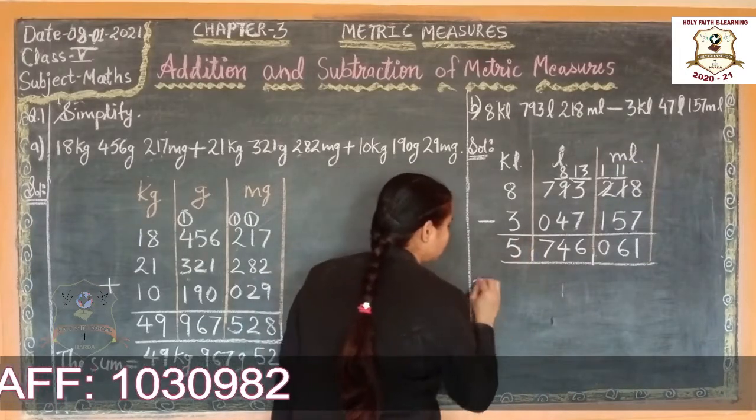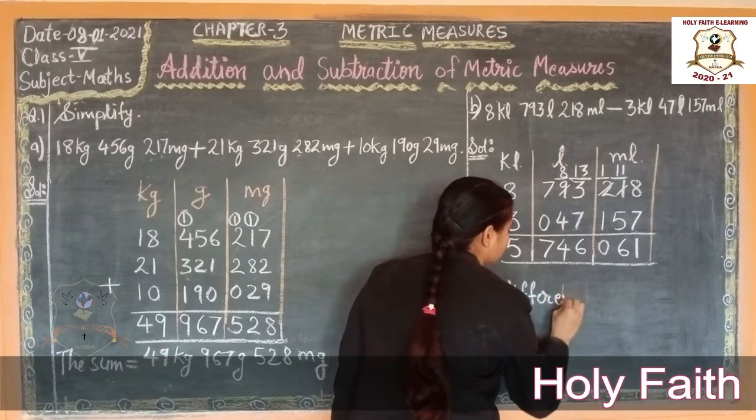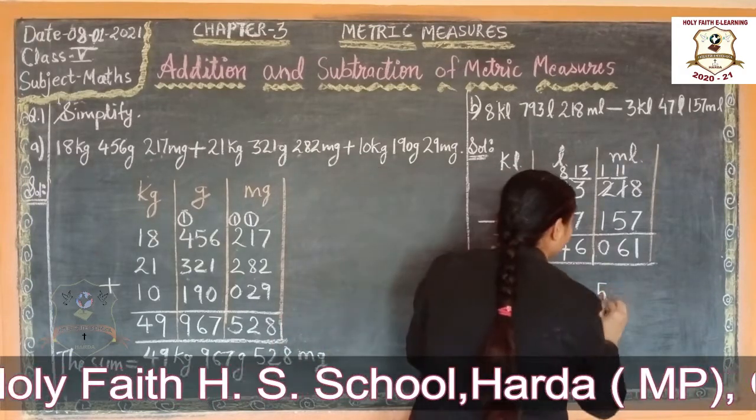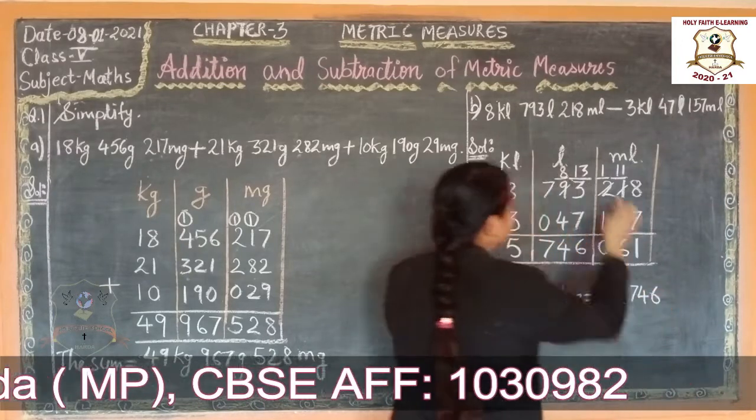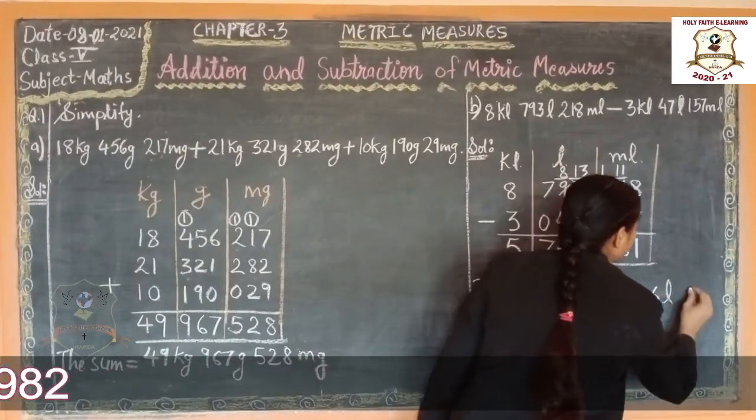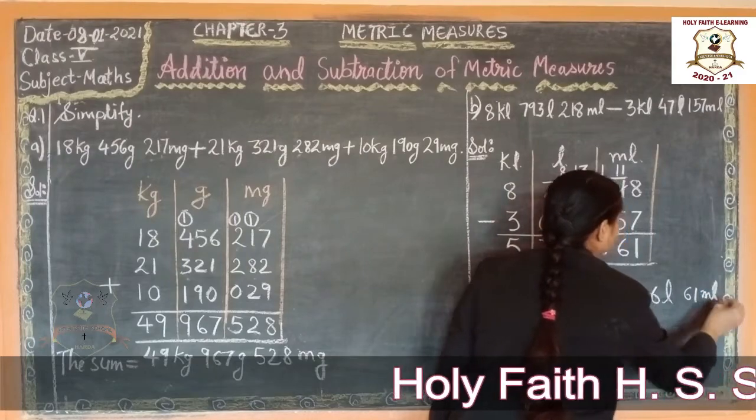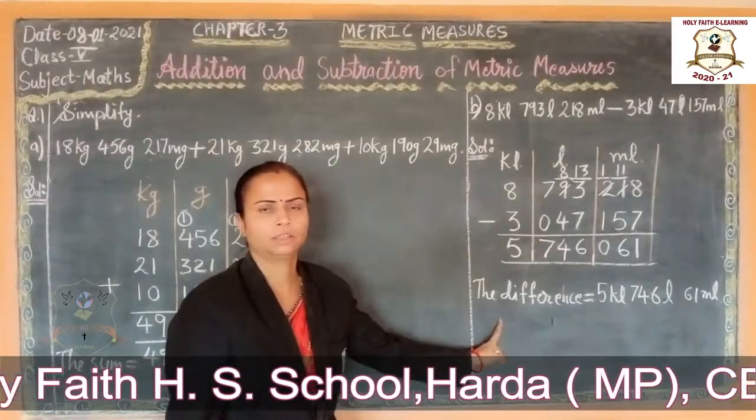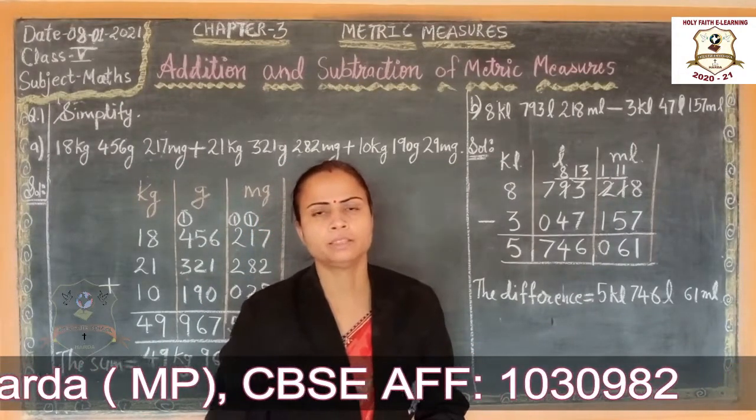So the difference is equals to 5 kilometer, 746 litre, and 61 milliliter. This is the answer. I hope you understood. That's all for today's class. Thank you.